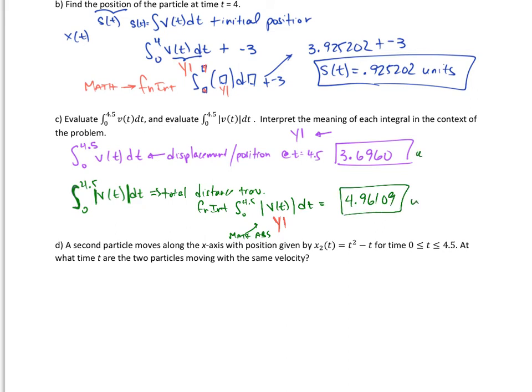Another way to do it is you could find out where the velocity graph, since you have v(t), where it crosses the axis and break it up and take the absolute value of the second part. If you graph these, you'll see that it crosses at 3.23604. Then you could do your v(t) dt.